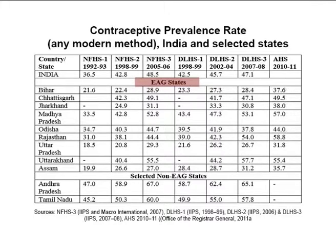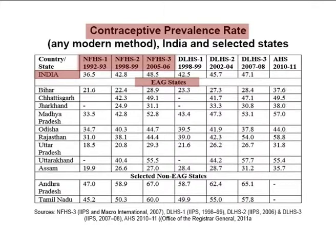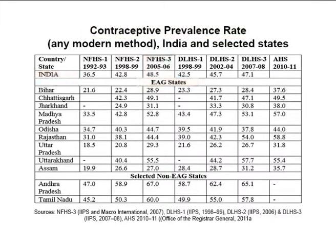In different surveys, all of the major EAG states have shown an increase in the use of contraceptives. The CPR as per NFHS surveys showed that the overall contraceptive use in India for any modern method increased from 36.5% in 1992–93 (NFHS-1) to 42.8% according to NFHS-2, to 48.5% in 2005–06 according to NFHS-3, representing a 0.9% average annual increase.